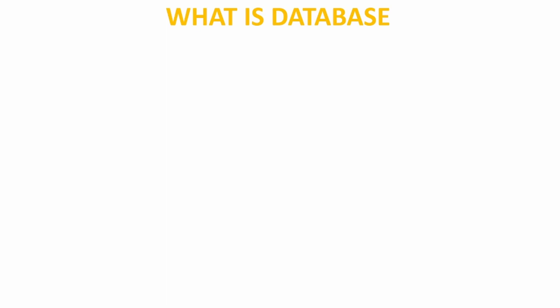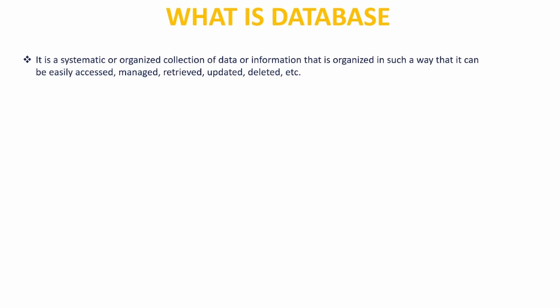Now that we have understood what data is, because this data needs to be stored somewhere — what is a database? A database is a systematic or organized collection of data or information that is organized in such a way that it can be easily accessed, managed, retrieved, updated, or even deleted, and so much more.